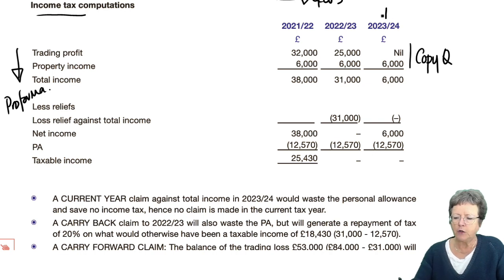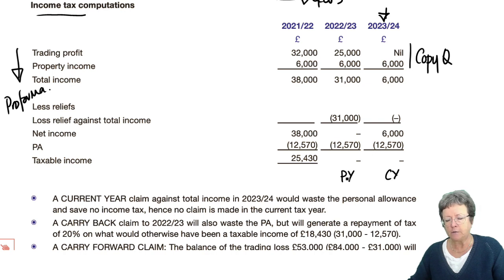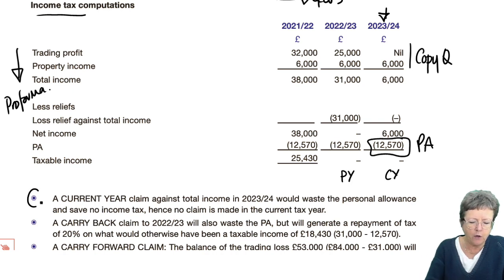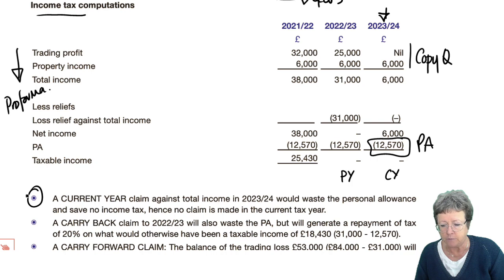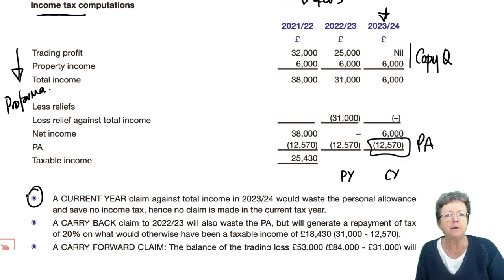This is the year of loss, so this would be a current year claim, and that's a previous year claim. You will note that the current year only has income of £6,000 in it, which is more than covered by the personal allowance. As shown in note 1, a current year claim against total income in 2023-24 would waste the personal allowance and save no income tax because he's not paying any income tax. Hence, there is no claim to be made in the current year — it's not worth it, and you don't need to.